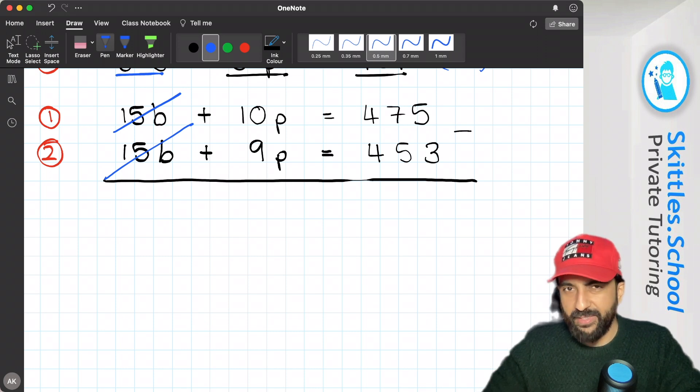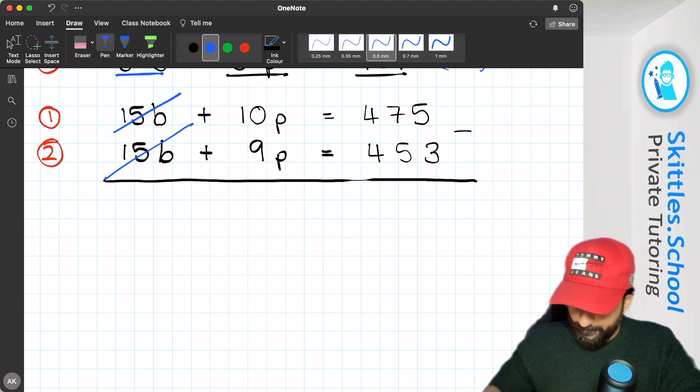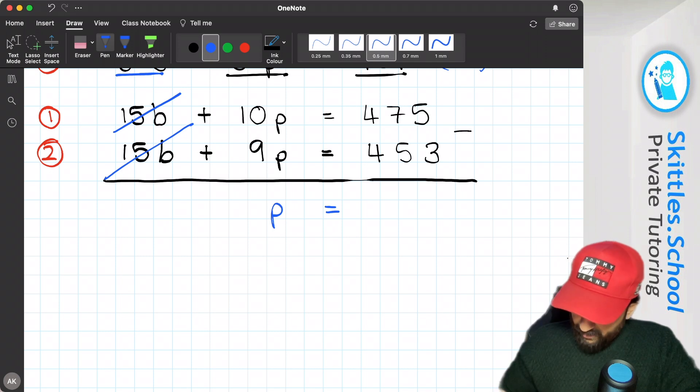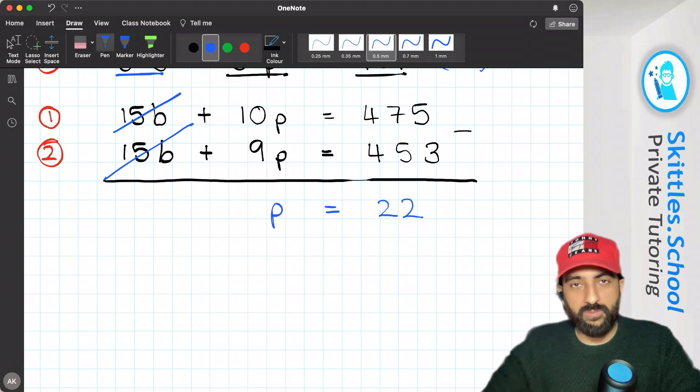10p, 10 pears, take away 9 pears is just one pear, or just p. 475 take away 453 is 22. So now we know the value of a pear. A pear is 22.